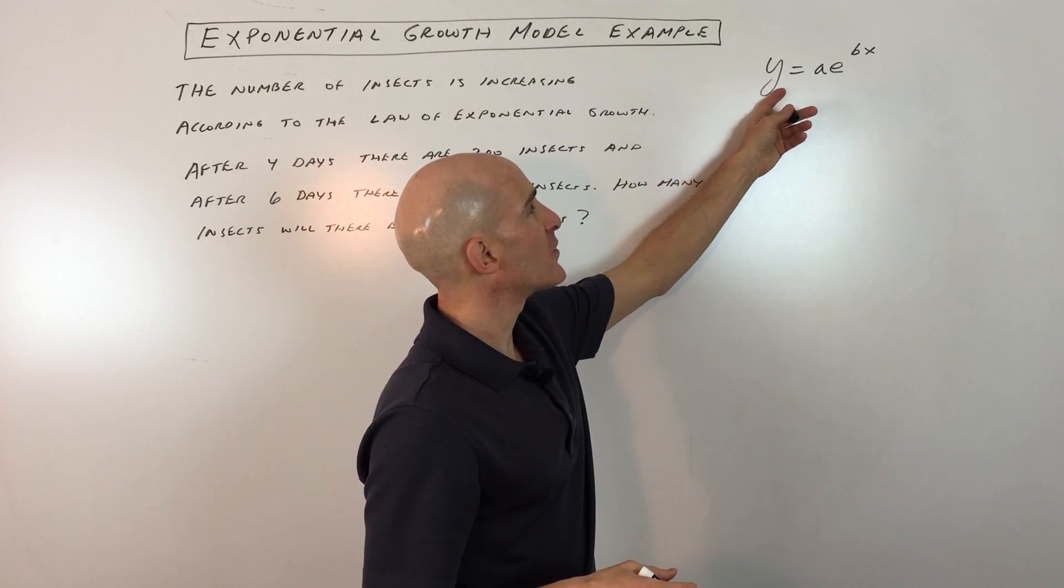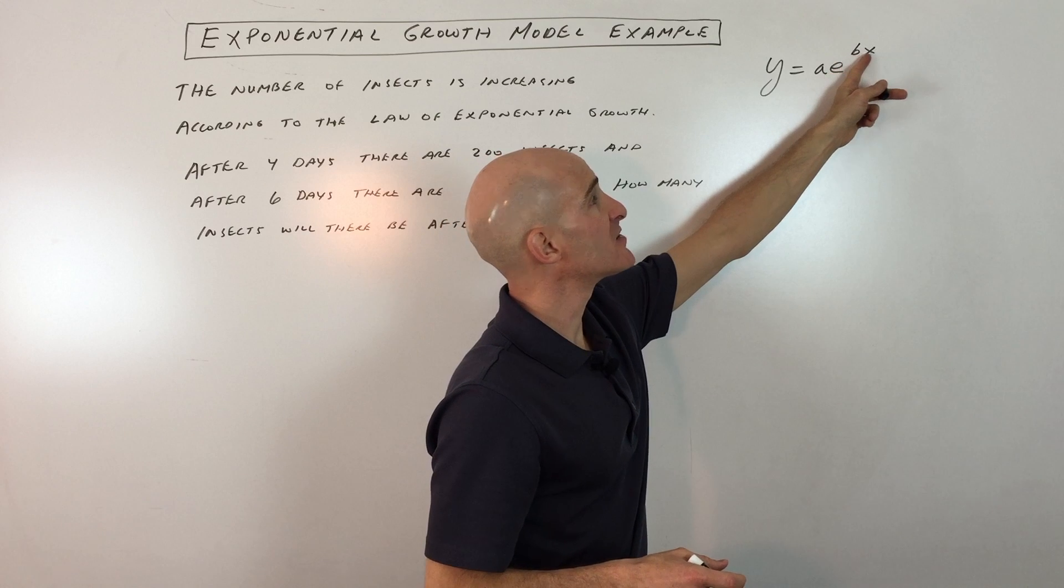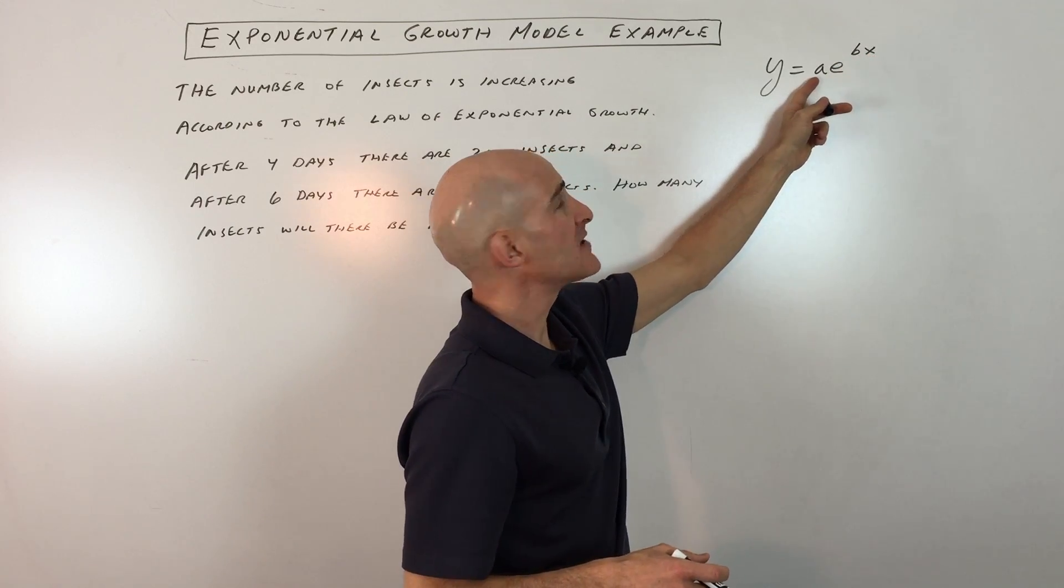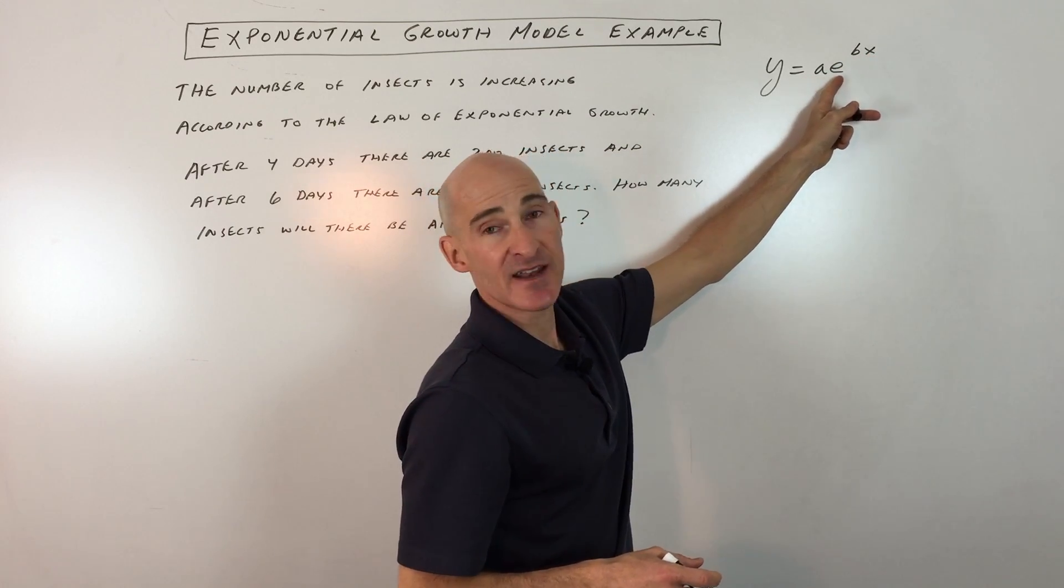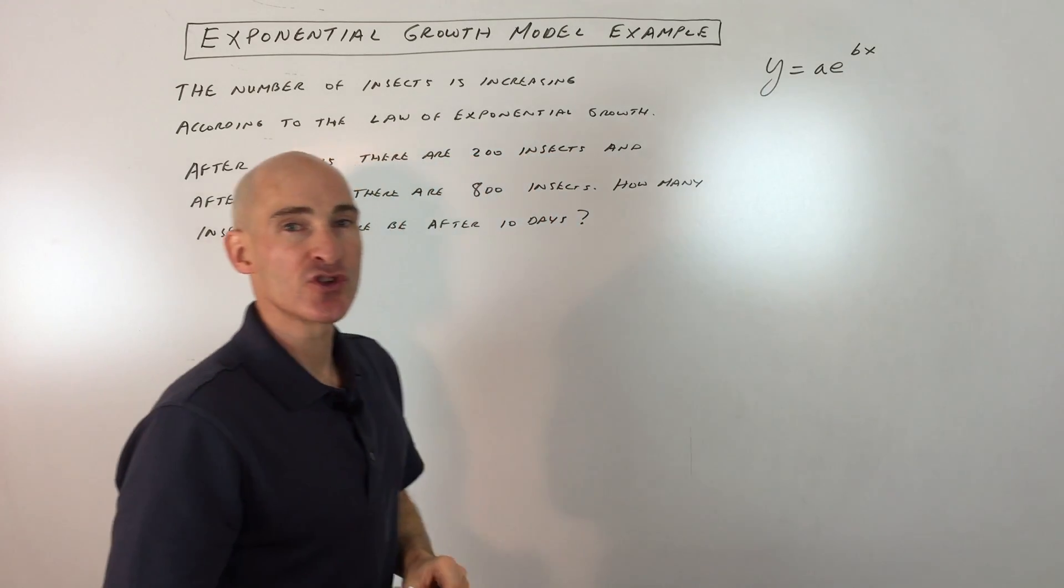It's this equation right here: y equals a times e raised to the bx power. So a is the initial quantity, e is the natural base e, 2.71. Let's look at an example and show you how to work with this formula.